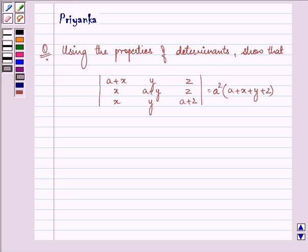Hello friends, how are you all doing today? The question says using the properties of determinants, show that the value of this determinant is equal to a squared bracket a plus x plus y plus z.